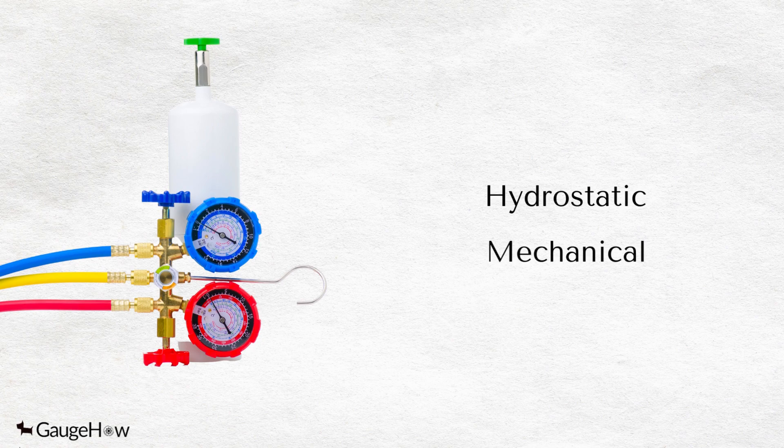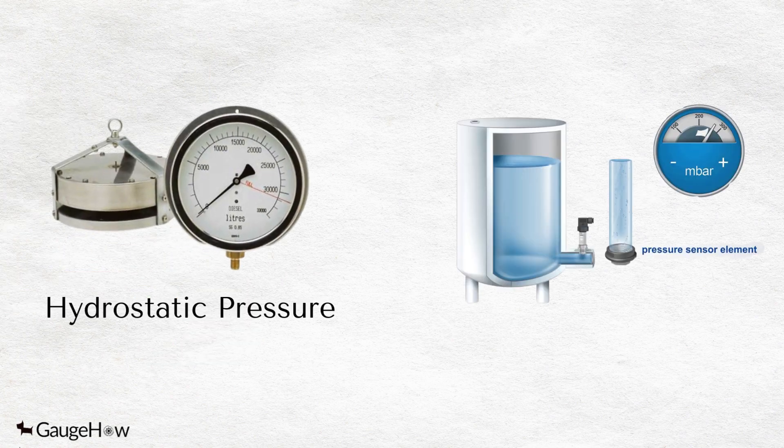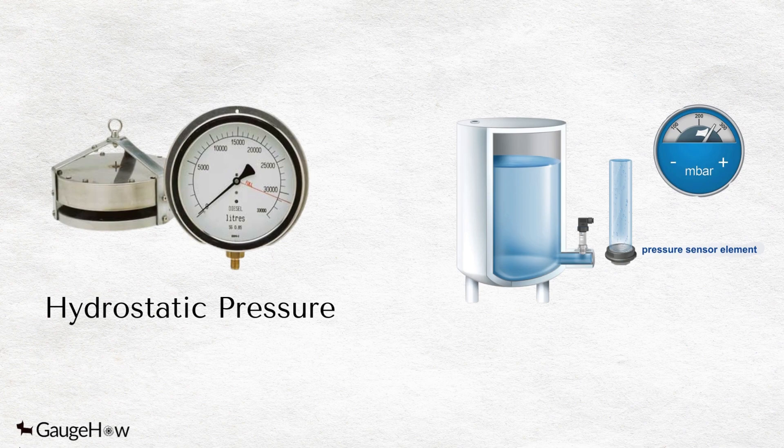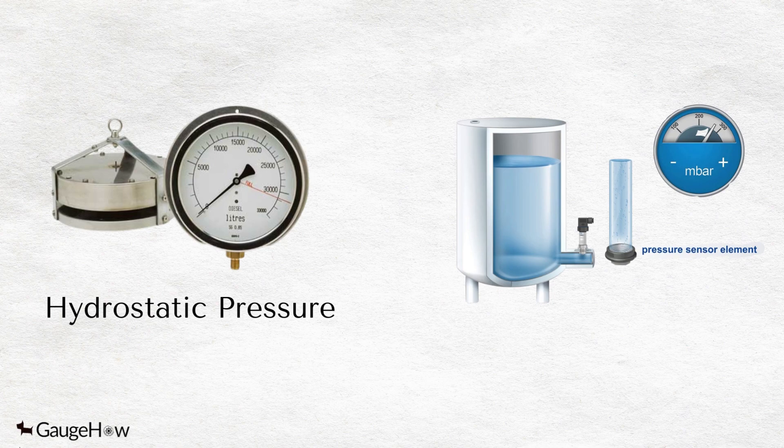Pressure gauges are divided into hydrostatic and mechanical. Hydrostatic pressure is generated by the weight of a liquid above a measurement point when the liquid is at rest. The height of the liquid influences the hydrostatic pressure.